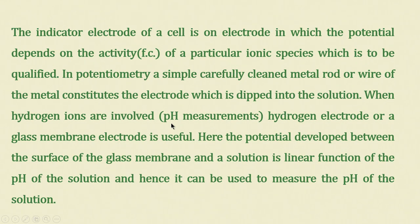We have been discussing ion-selective electrodes, which are an extension of the glass electrode and pH meters. The indicator electrode of a cell is one in which the potential depends upon the activity of the particular ionic species to be quantified. In potentiometry, a simple metal rod or wire constitutes the electrode dipped into solution. We have covered electrodes of the first kind, second kind, pH measurements, and activity earlier.